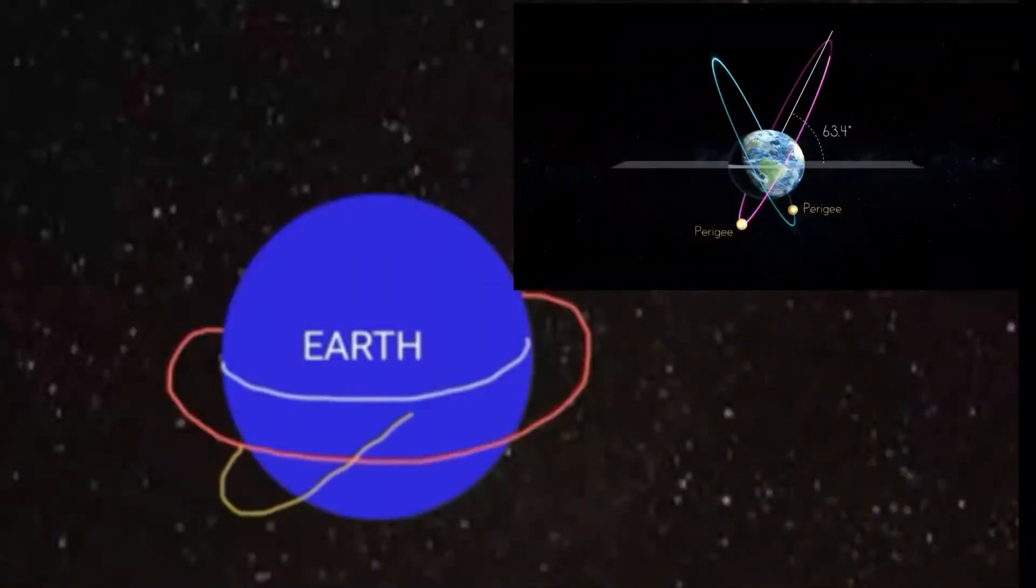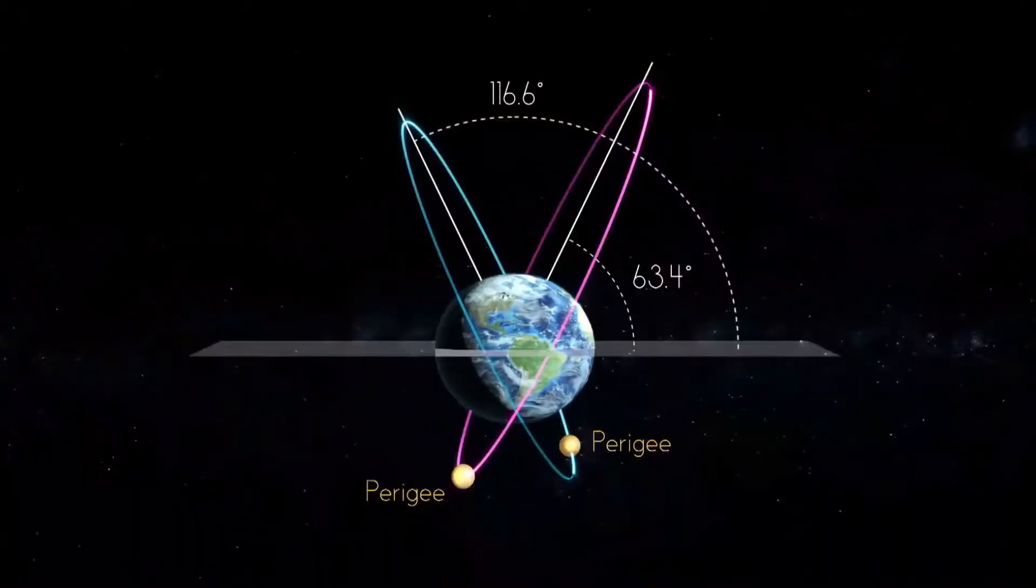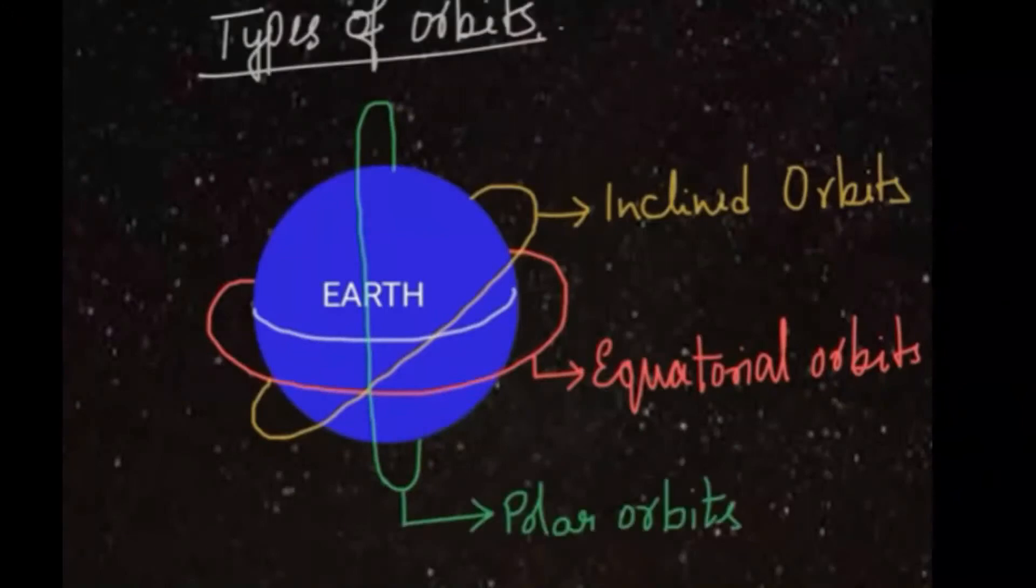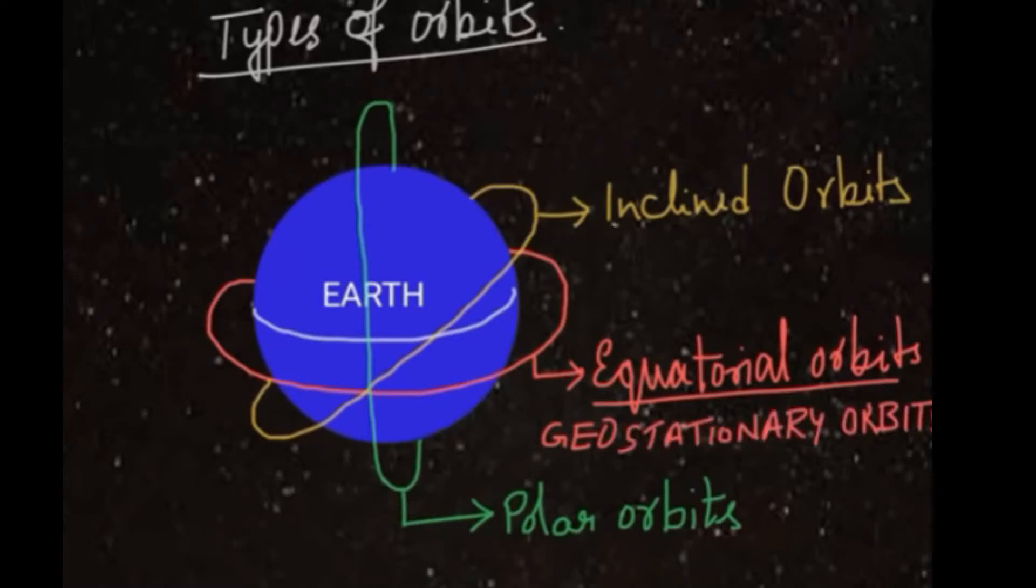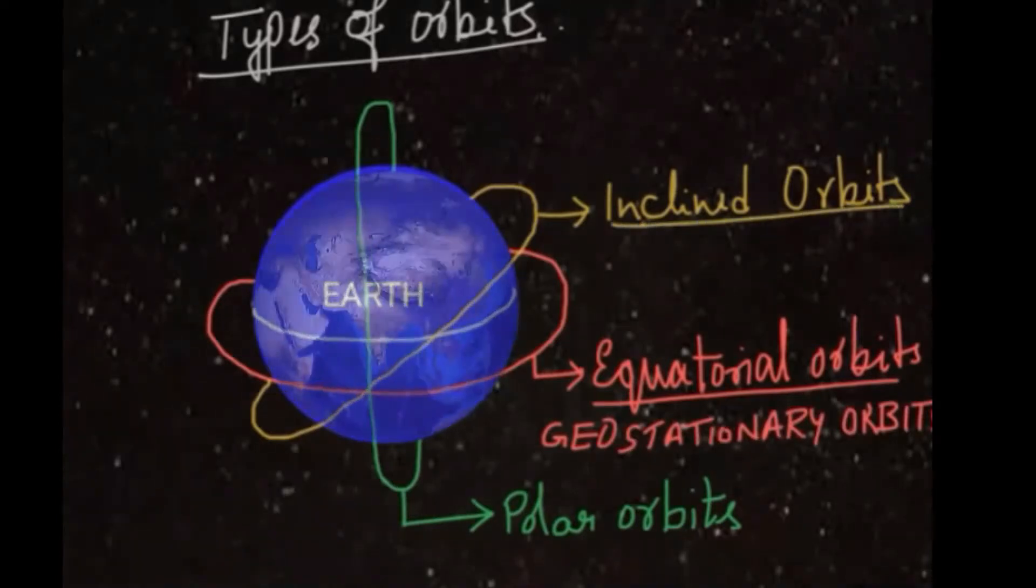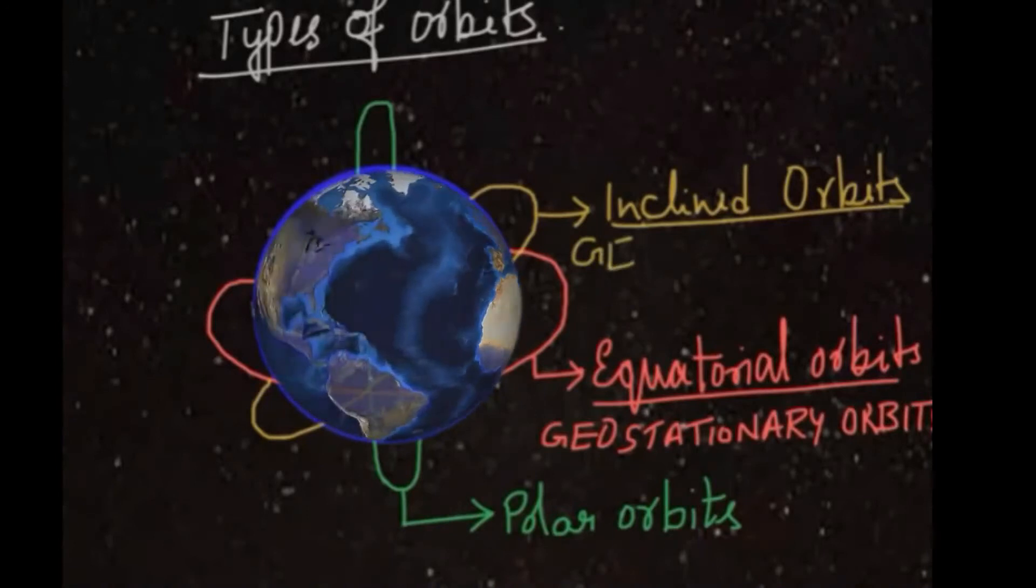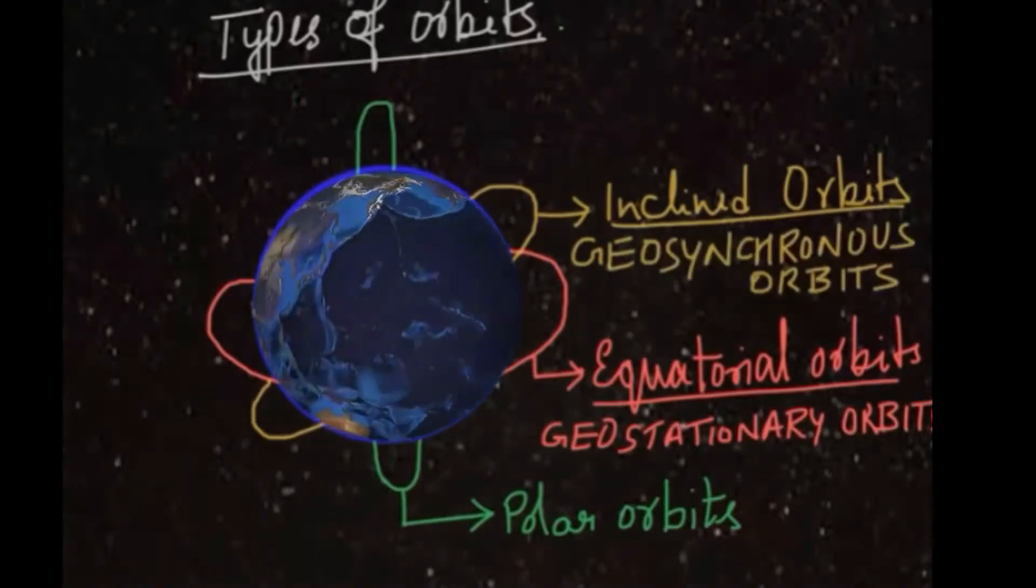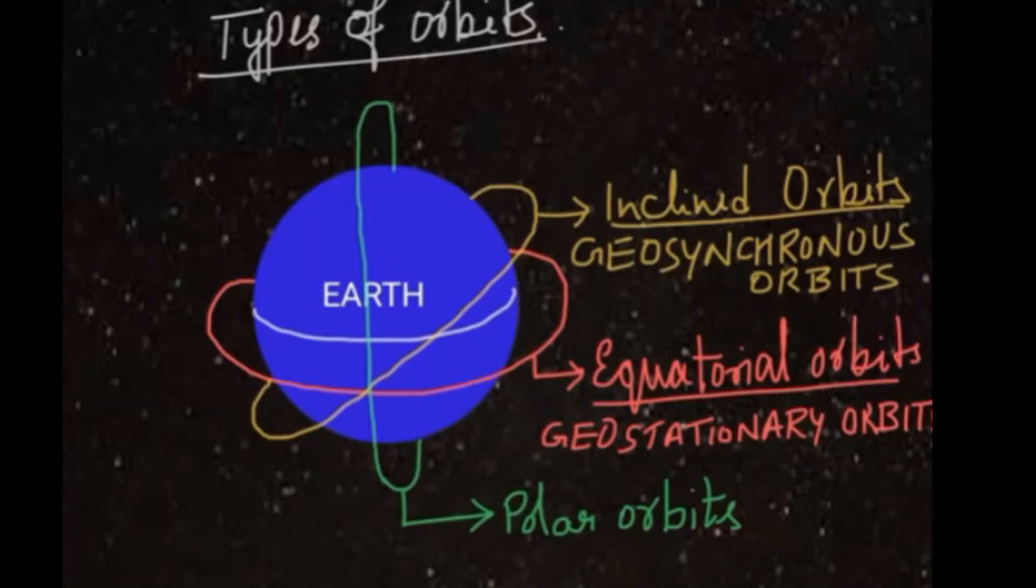Such satellites placed directly on the equator are called geostationary satellites. Another category makes an inclined angle to the Earth's surface - these are called geosynchronous satellites. So equatorial orbits are geostationary, while inclined orbits are geosynchronous. Another kind of satellites are placed on